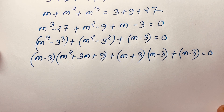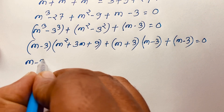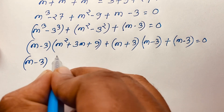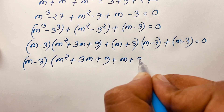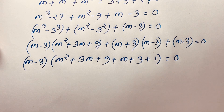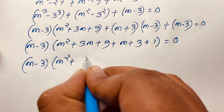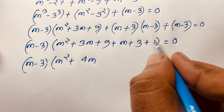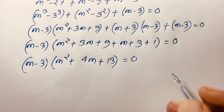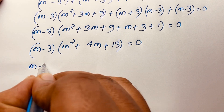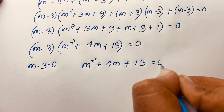You can see (m minus 3) is a common factor throughout. Factoring it out gives: (m minus 3) times (m squared plus 3m + 9 + m + 3 + 1) equals 0. Combining terms: m squared plus 4m plus 13. So we have (m minus 3)(m squared + 4m + 13) equals 0. This gives us two cases: m minus 3 equals 0, or m squared plus 4m plus 13 equals 0.